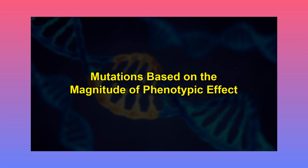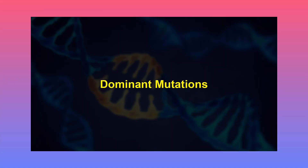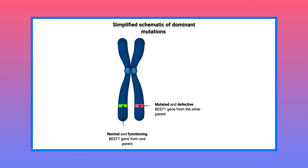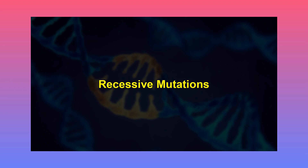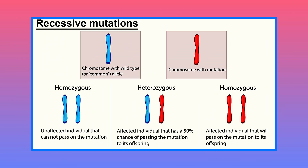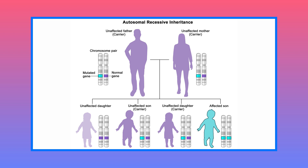Let's now discuss mutations based on the magnitude of phenotypic effect. Three types of mutations may occur. The first type is dominant mutations, which have dominant phenotypic expression. For example, in humans, the mutation in aniridia — that is, absence of the iris of the eyes — occurs due to a dominant mutant gene. The second type is recessive mutations. Most types of mutations are recessive in nature and so they are not expressed phenotypically immediately. The phenotypic effects of a recessive gene mutation are seen only after one or more generations when the mutant gene is able to recombine with another similar recessive gene.